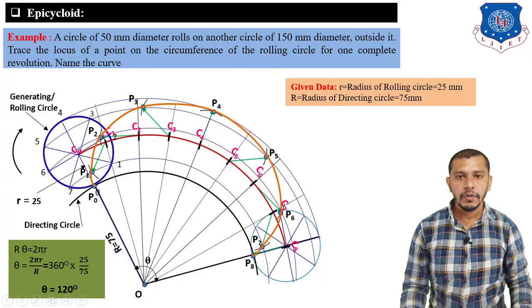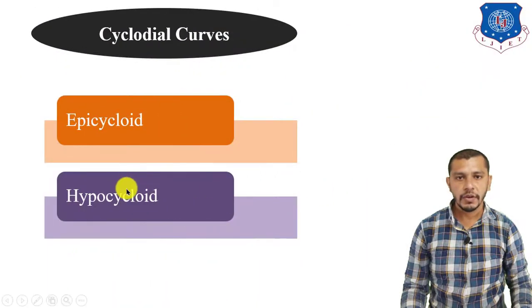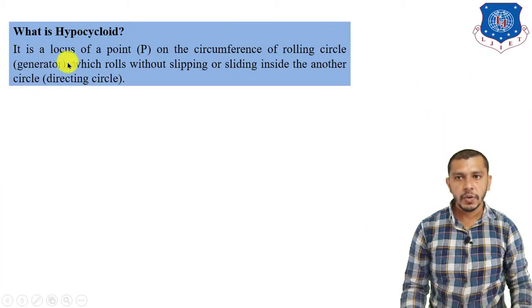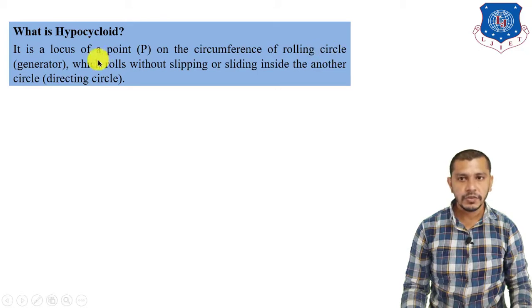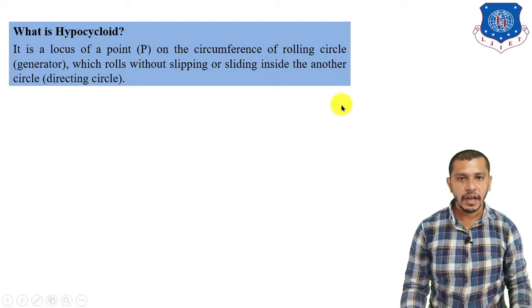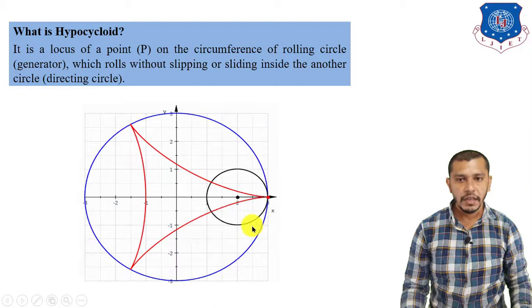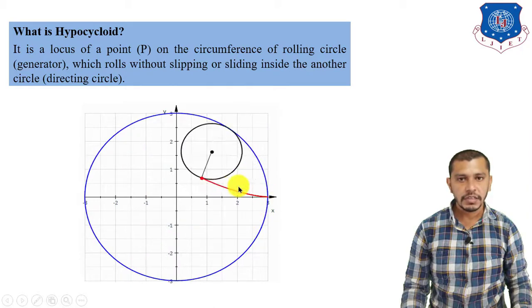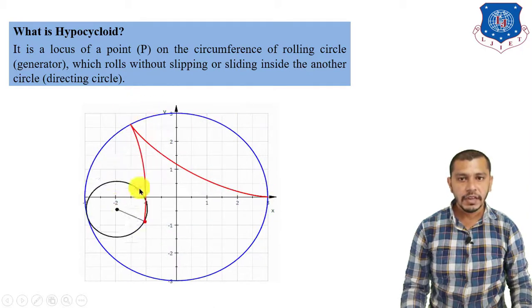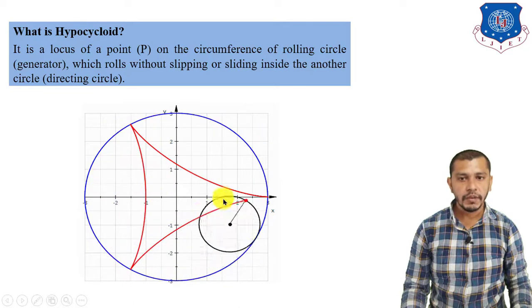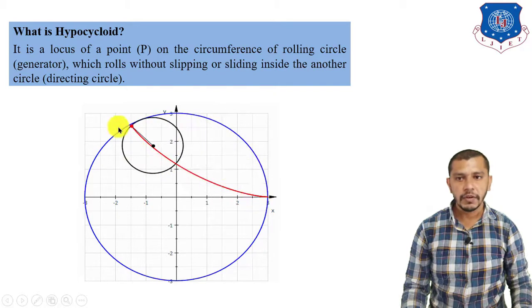Now let's move on to the next curve: hypocycloid. What is hypocycloid? It is a locus of a point on the circumference of the rolling circle which rolls without slipping or sliding inside another circle. In this figure you can see that if the circle rolls inside another circle, the curve traced out by the point on the circumference of the rolling circle is the hypocycloid.